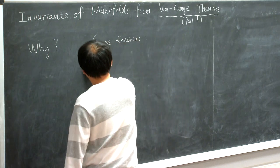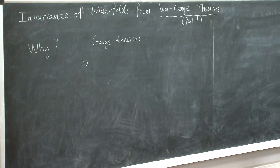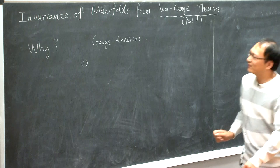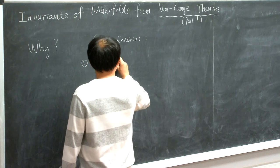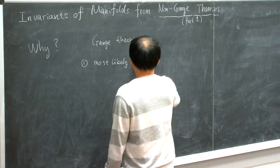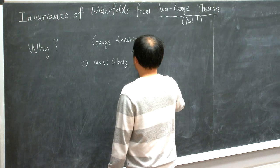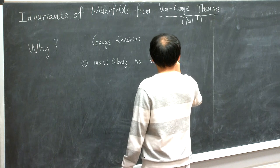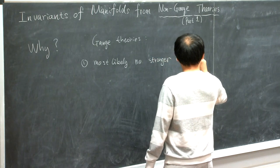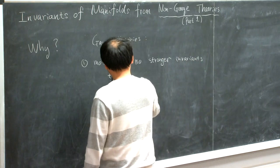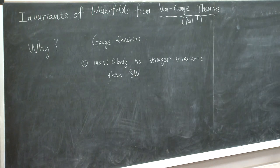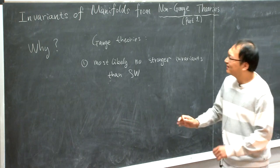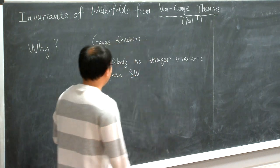First of all, we expect that from gauge theory, you are not going to be able to get stronger invariants of four-manifolds than the Seiberg-Witten invariants. Indeed, if you study gauge theories of higher rank or with more matter, somehow it seems that you can always relate these new invariants to the usual Seiberg-Witten invariants.